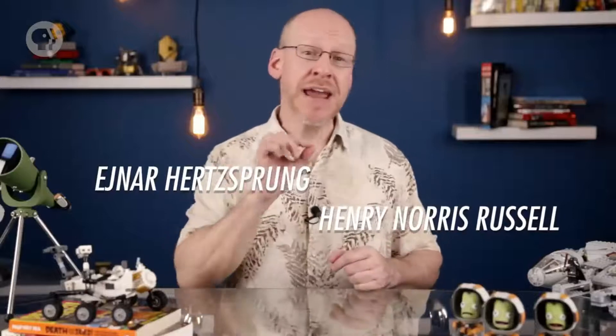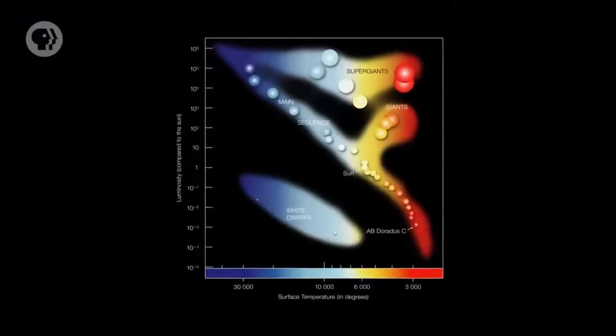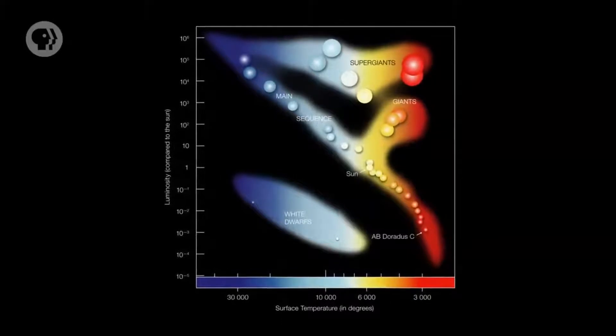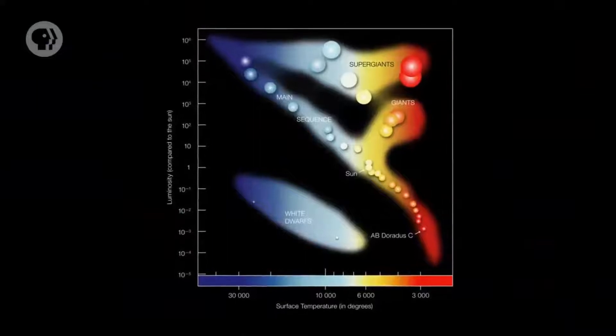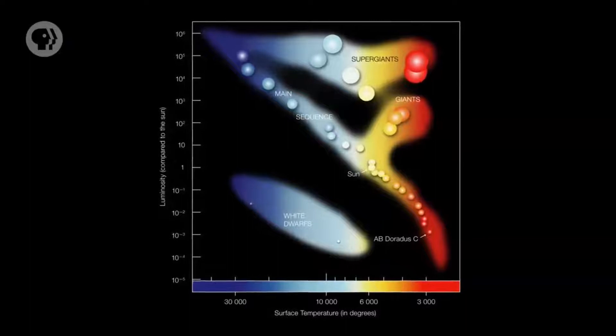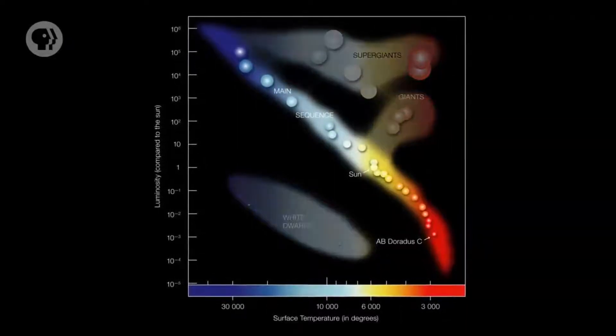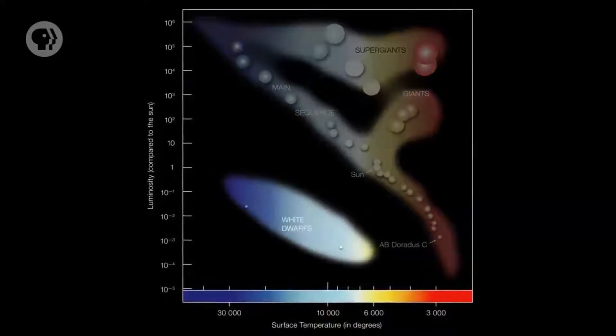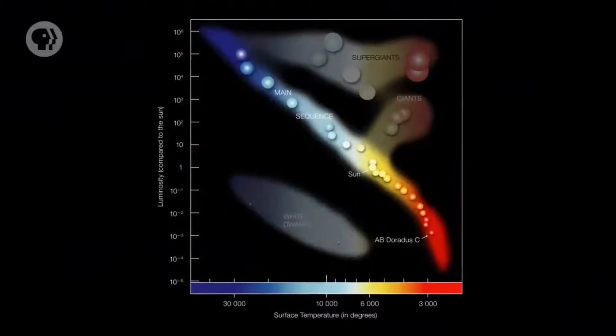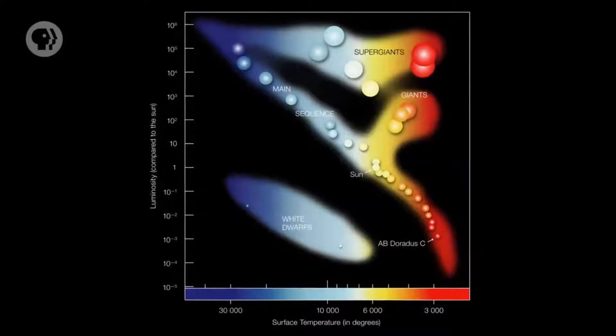A century ago, astronomers Einar Hertzsprung and Henry Norris Russell made a graph plotting a star's luminosity versus its temperature — and got a surprise: a very strong trend. This HR diagram is not an exaggeration to call the single most important graph in all of astronomy. Really bright stars are near the top, fainter ones near the bottom, hot blue stars on the left, cool red stars on the right. Most stars fall into a thick diagonal line called the main sequence.